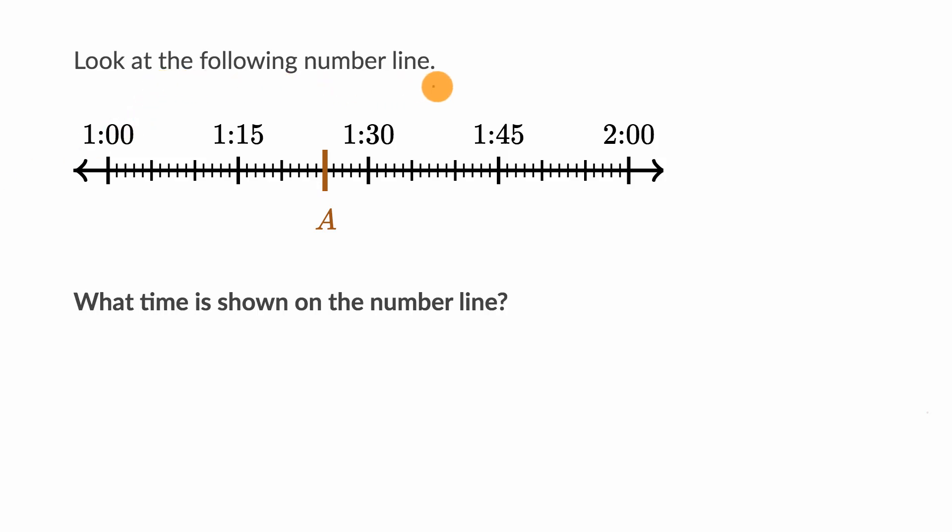We're told to look at the following number line. This number line actually has times on it, so you could even call it a timeline. We're starting at one o'clock, then 1:15, 1:30, 1:45, then two o'clock. The question is: what time is shown on the number line? Pause this video and see if you can figure that out.